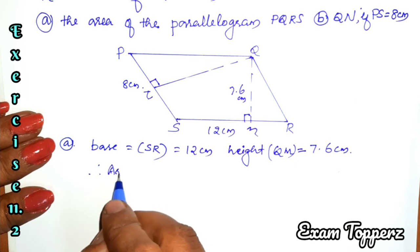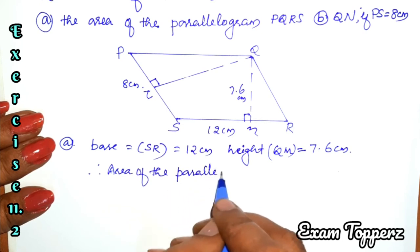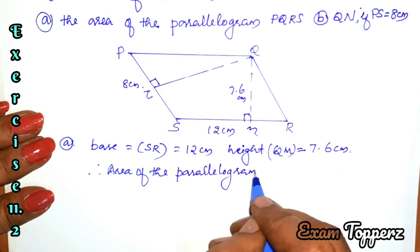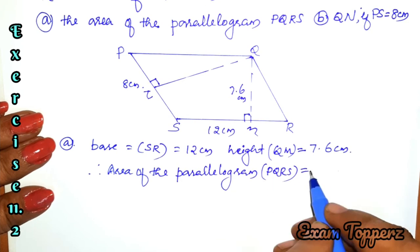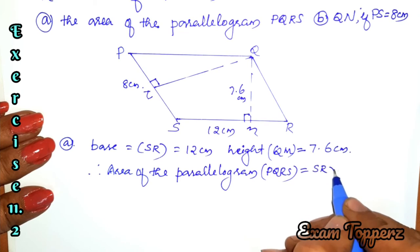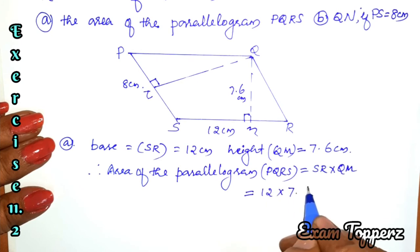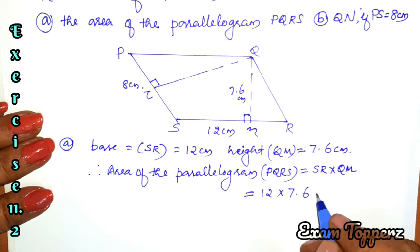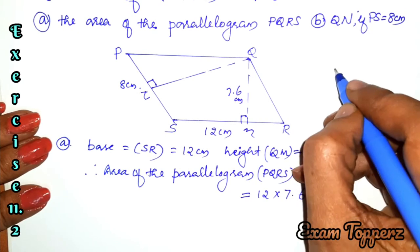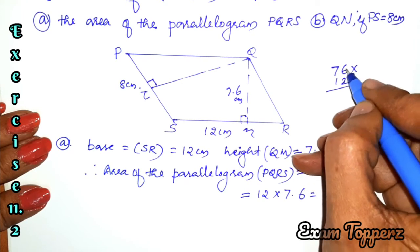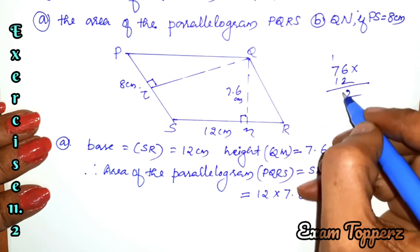Therefore, the area of the parallelogram PQRS is equal to base × height = 12 × 7.6. Calculating: 6 × 2 = 12, remainder 1; 6 × 2 = 7, giving 14; 14 + 1 = 50.